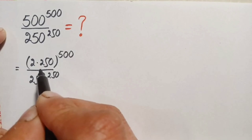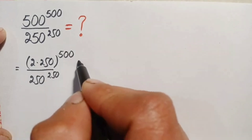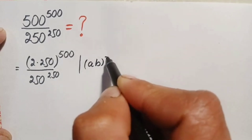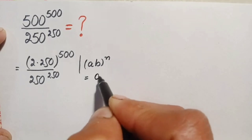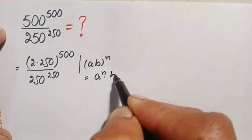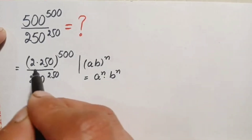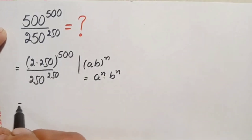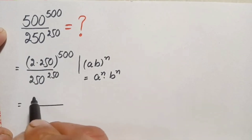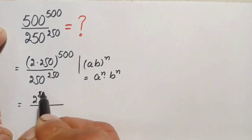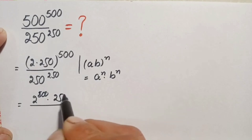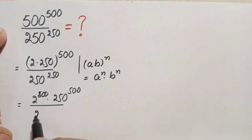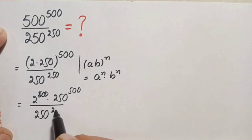Now in the numerator, we will use the exponential identity: (a times b) raised to power n equals a raised to power n times b raised to power n. Using this identity, we spread the power over 2 and 250. The numerator becomes 2 raised to power 500 times 250 raised to power 500, divided by 250 raised to power 250.